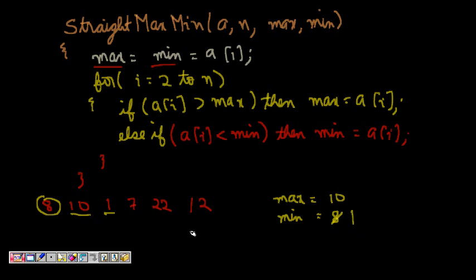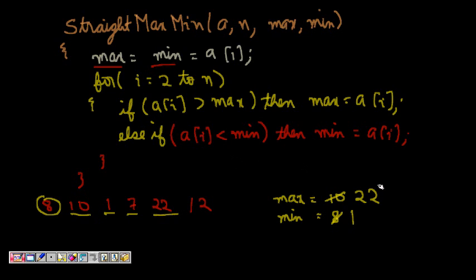We continue: at index 4, a[4] is 7, which is neither greater than max nor less than min. At index 5, a[5] is 22, which is greater than max (10), so new max becomes 22. Then 12 is not greater than max and not less than min. This straight algorithm is O(n) because we run one for loop.